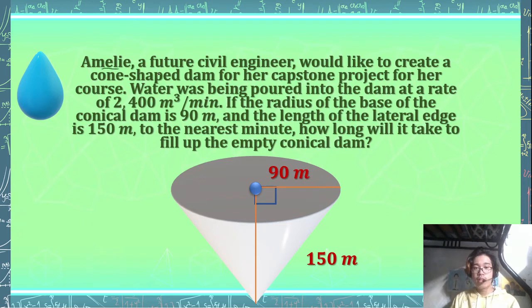We have here Emily, a future civil engineer, would like to create a cone-shaped dam for her capstone project for her course. Water was being poured into the dam that she created at a rate of 2,400 cubic meters per minute. If the radius of the base of the conical dam is 90 meters and the length of the lateral edge is 150 meters...